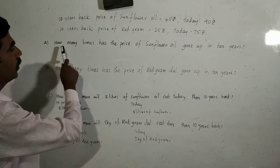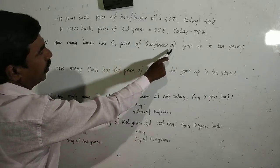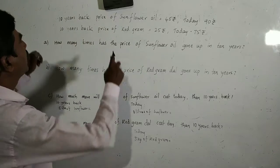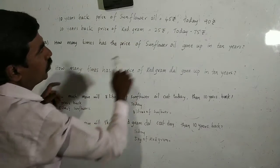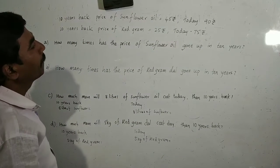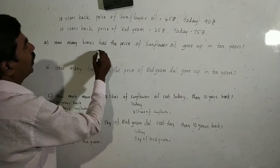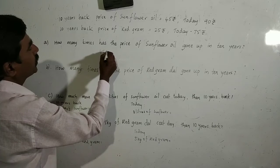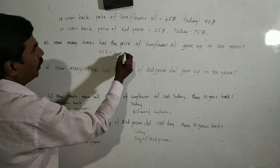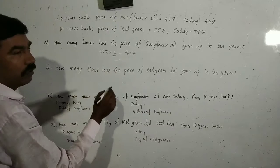First question: how many times has the price of sunflower oil gone up in 10 years? 10 years back price is Rs. 45, today's price is Rs. 90. So, 45 into 2 is equal to 90. How many times? 2 times.